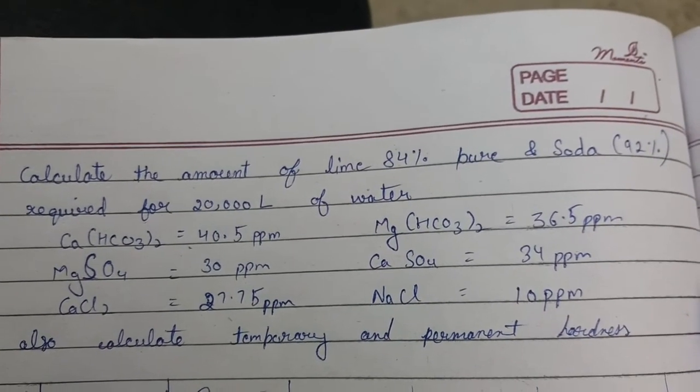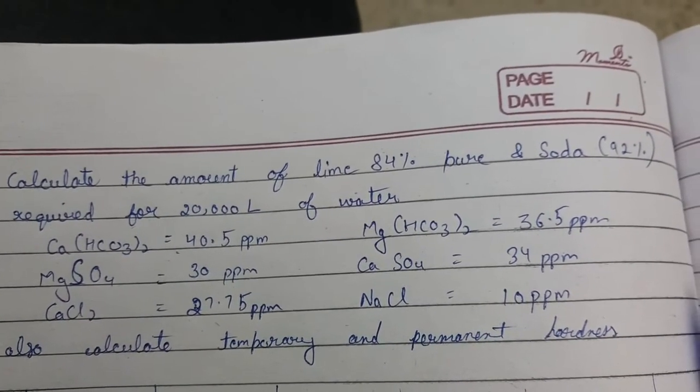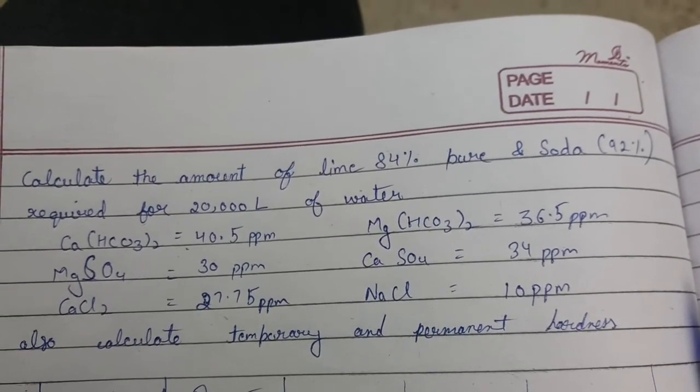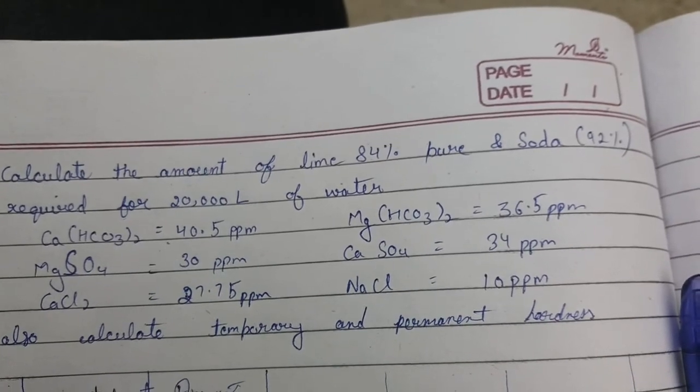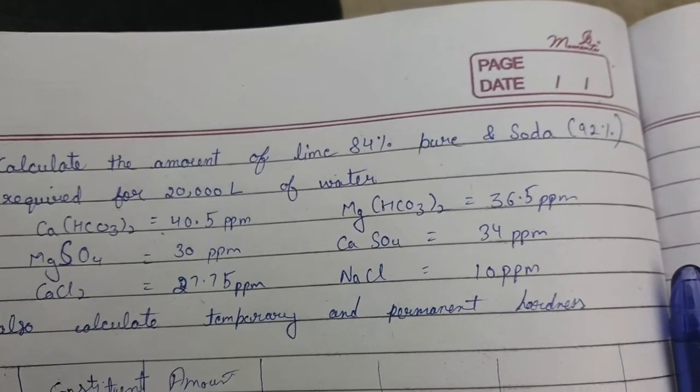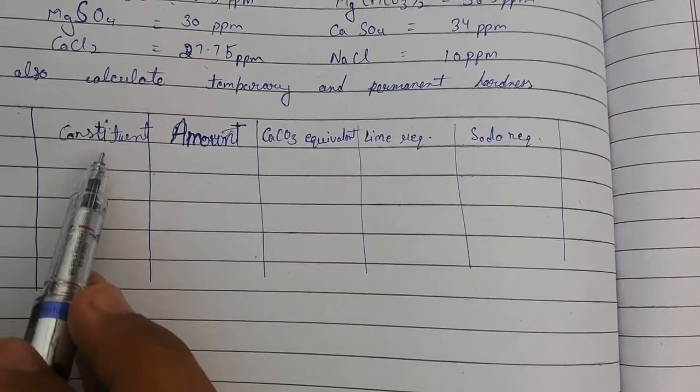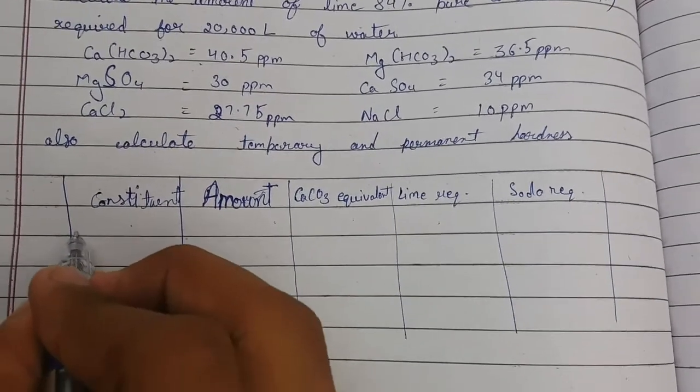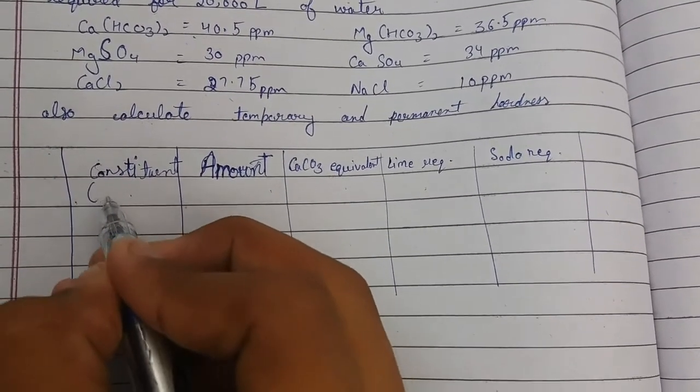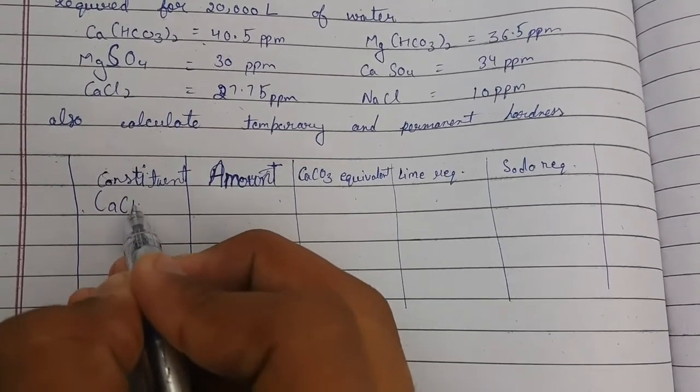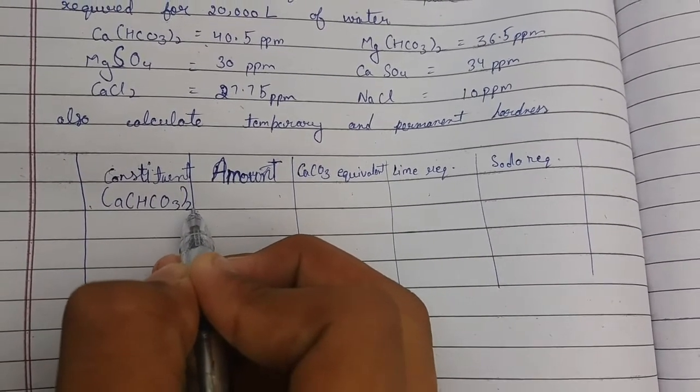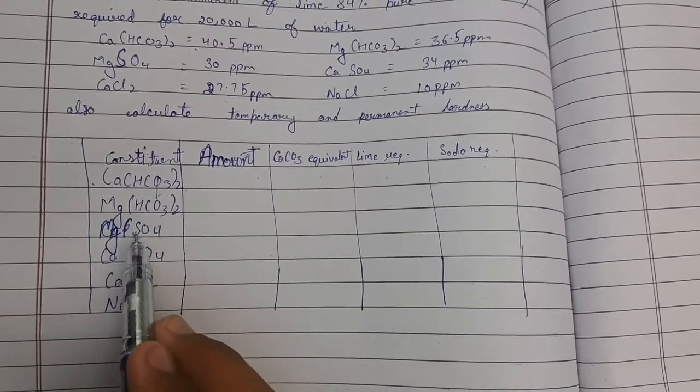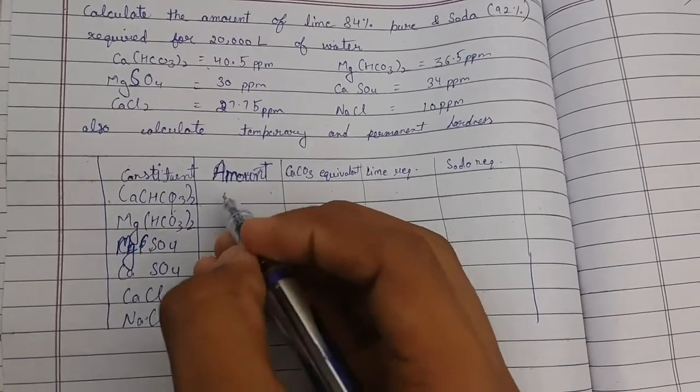Now let's talk about the question. Please see this question and try to understand it. I will solve the question now. First we will draw these blocks named: constituent, amount, CaCO3 equivalent, lime required, and soda required. Then we will write the constituents provided above the question.